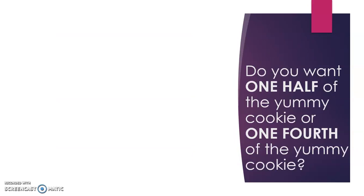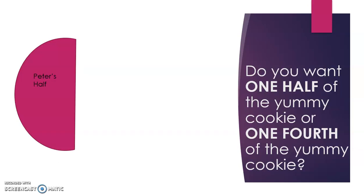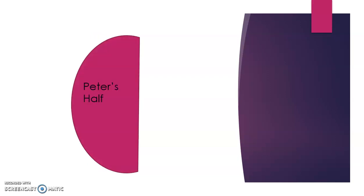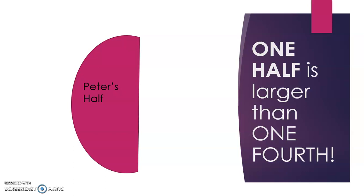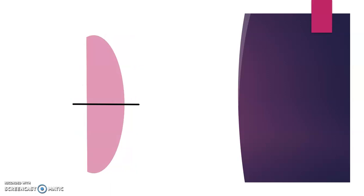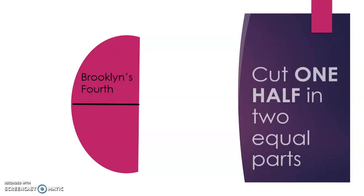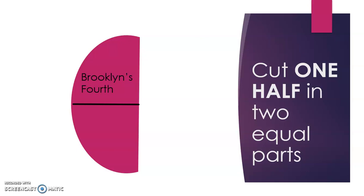So do you want to have one half — Peter's half of the yummy cookie — or one fourth — Brooklyn's fourth of the yummy cookie? Pause and discuss, then press play. I would definitely want to have Peter's half of the cookie. One half of the cookie is larger than one fourth of the cookie. To get one fourth, you need to cut the two halves in half again — that's a lot smaller. You need two fourths of the cookie to have the same amount as one half.